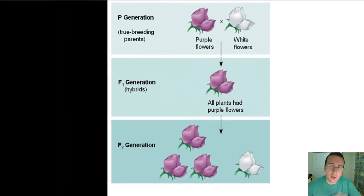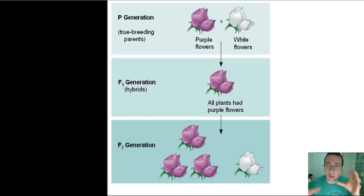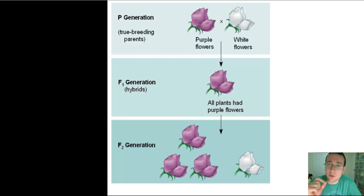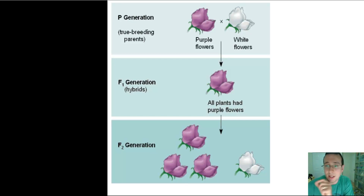Mendel started with the pea generation — true breeders. He made sure he was crossing what he wanted to cross and controlled that. He crossed those true breeders with themselves to make the F1 generation, which was always hybrids. This teaches him his first lesson: that there is no such thing as blending — particle genetics is what dominates here, where one trait dominates over the other whenever two collide.